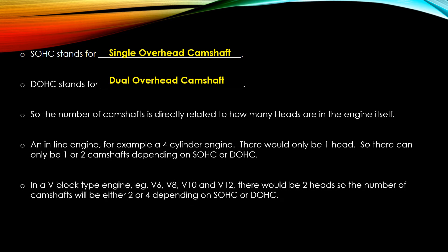So an inline engine can have one or two camshafts depending on single or dual overhead cam. In a V-block — V6, V8, V10, V12 — there's a head on each section of the V, so two heads. For a single overhead cam V-type engine that means two camshafts, one in each head; dual overhead cam means four, two in each head.